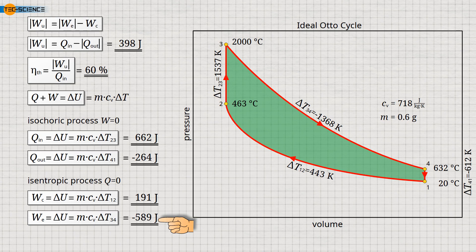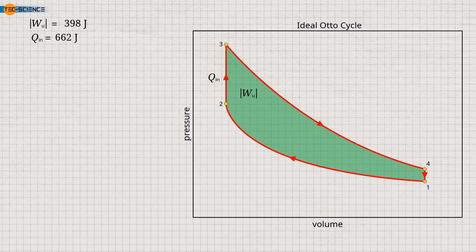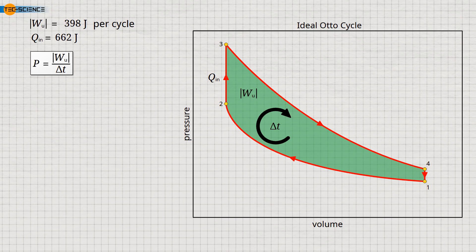As already explained, the difference between the expansion and compression work is the useful work. In this way, we obtain the same useful work as the difference in heat energy, which is 398 joules. From this useful work that the gas in the engine cylinder delivers to the crankshaft during one thermodynamic cycle, we can now determine the engine power as the quotient of the useful work done and the time required to do that work.